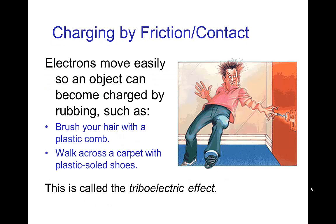But it's possible to accumulate excess electrons or to strip away electrons. One of the easiest simplest ways of achieving this is that since electrons move easily, they can just by frictional rubbing be transferred from one object to another. So, when you brush your hair with a plastic comb or walk across a carpet with plastic shoes, you may notice some electrical charge that develops. This gathering charge by frictional contact is called the triboelectric effect.